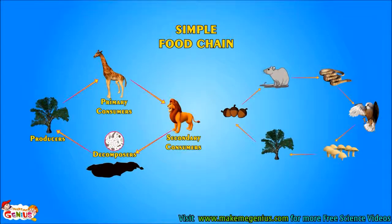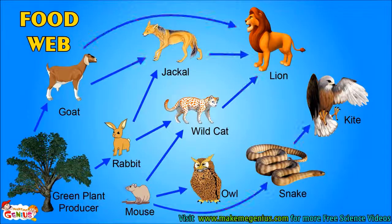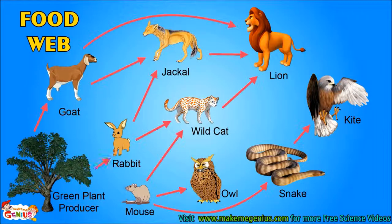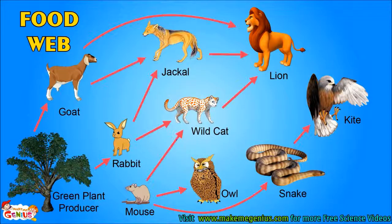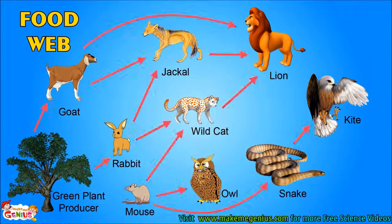Life is not so simple. Look at this complex picture. A rat can be eaten by a cat or it may be eaten by a snake. A plant can be eaten by a goat or by a rabbit. These kinds of complex food chains are called a food web, as they are very interconnected, like a spider web.